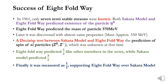Another success was a decisive test between the Sakata model and the Eightfold Way: the prediction of the spin of the Xi (Ξ) particles, which was unknown at the time. The Eightfold Way predicted a spin of 1/2, consistent with other members in the octet of semi-stable baryons, while the Sakata model predicted a spin of 3/2. It was finally measured as 1/2, supporting the Eightfold Way and negating the Sakata model.